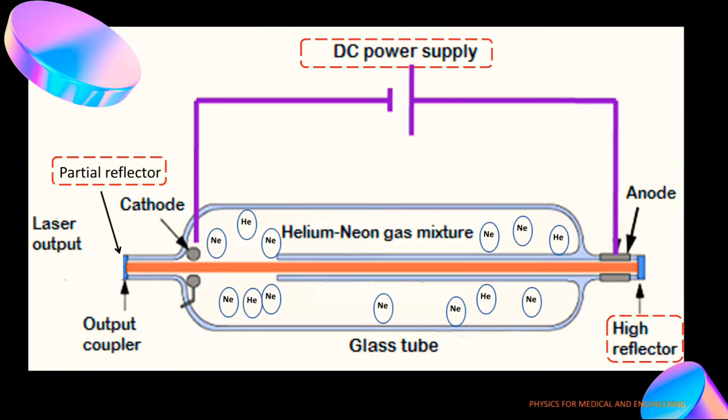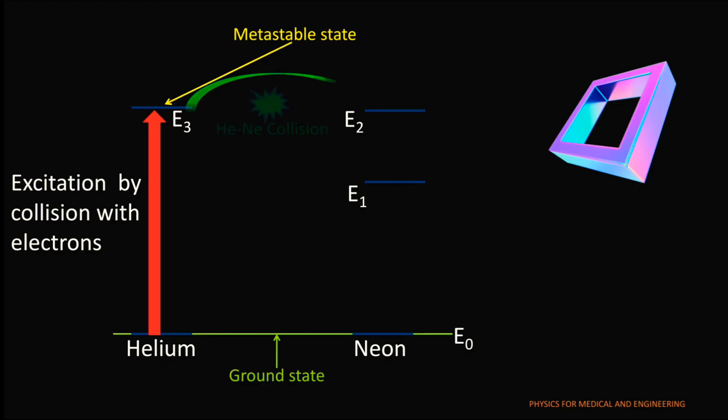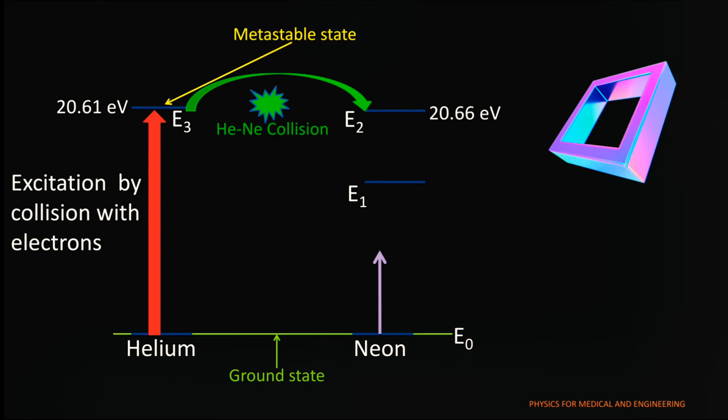When these excited helium atoms move within the laser tube, they collide with the ground state neon atoms. At each collision, some of the energy within the helium atom is transferred to the neon atom, and so raising it to an excited metastable state. The energy of helium state E3 is very close to the energy of neon state E2.